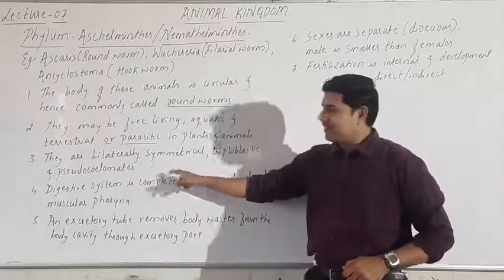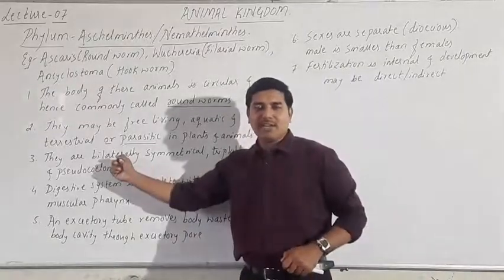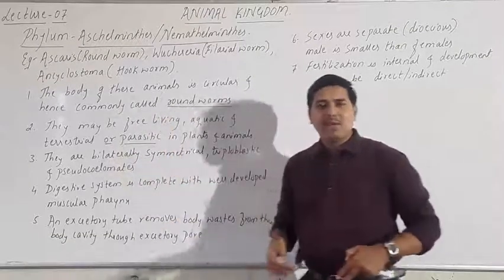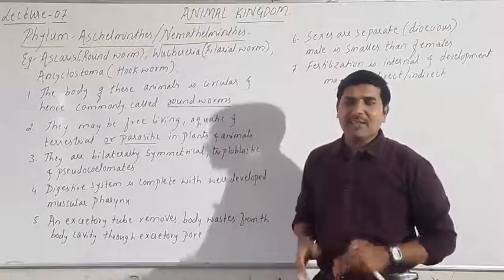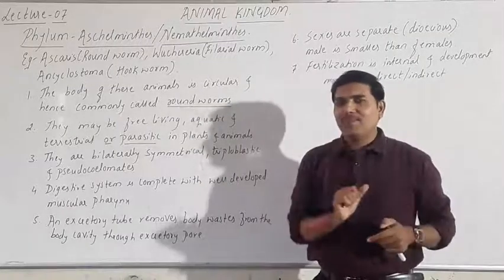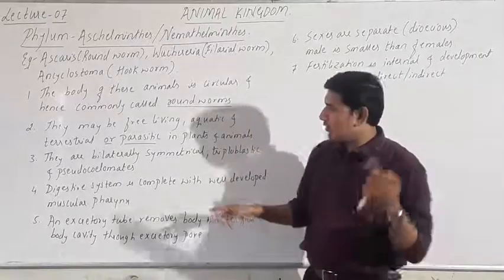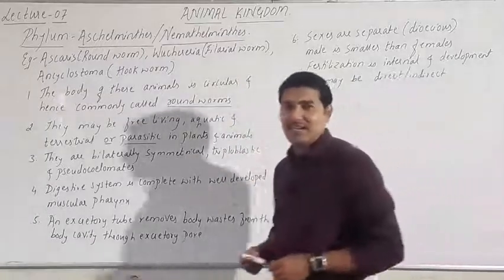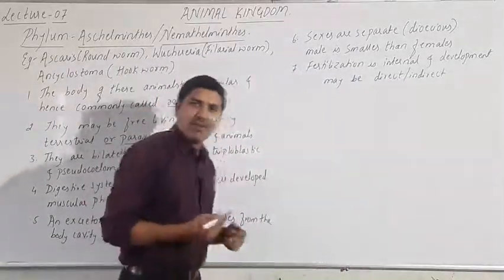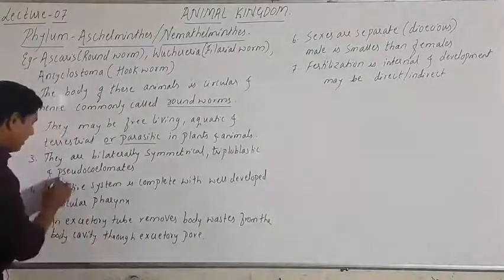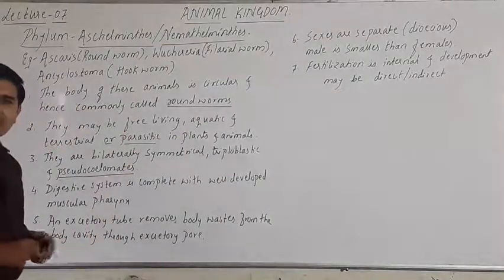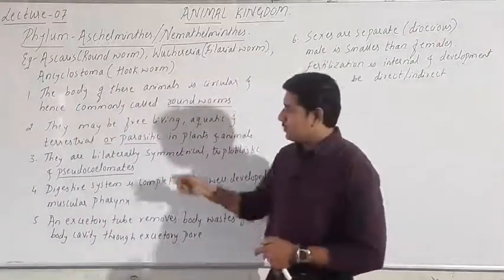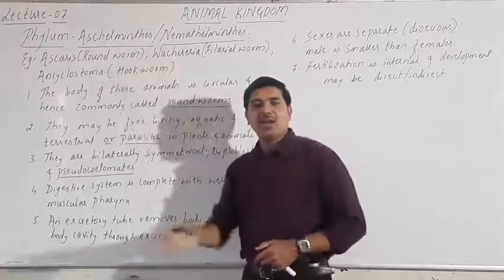They are bilaterally symmetrical. They are triploblastic, having three germ layers. One more special characteristic of this phylum is they are pseudocoelomates — meaning they have a false body cavity. The animal Aschelminthes, or roundworm, is pseudocoelomate.